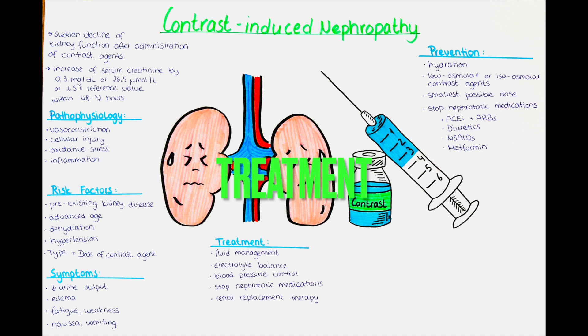How can we treat contrast-induced nephropathy? If it occurs, treatment mainly focuses on supportive care and managing complications. This may involve measures to maintain fluid and electrolyte balance, optimizing blood pressure and addressing underlying causes. Adequate hydration is crucial to maintain kidney function and flush out the contrast agent, so intravenous fluids may be administered to ensure sufficient fluid volume and urine output.